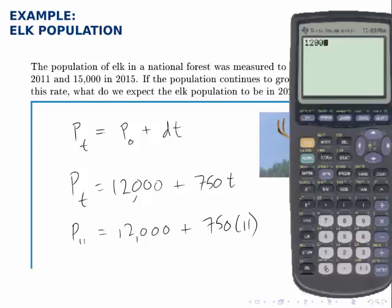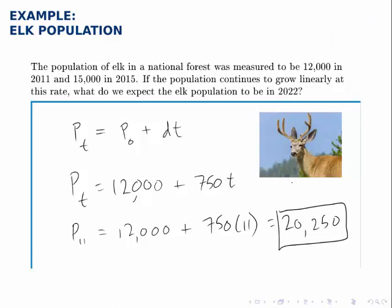12,000 plus 750 times 11 equals 20,250. Therefore, we predict that in 2022, the population of elk will reach approximately 20,250.